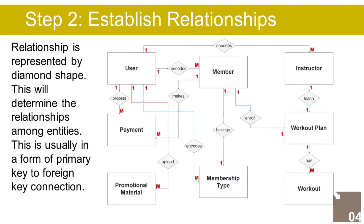After specifying our entities, it is time to connect or establish relationships among them. The following relationships have been established: 1. The users manage and update the site information — one-to-one relationship. 2. The user processes the orders of the customers — one-to-many relationship.